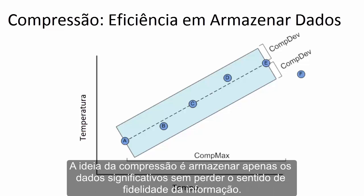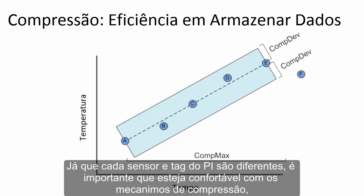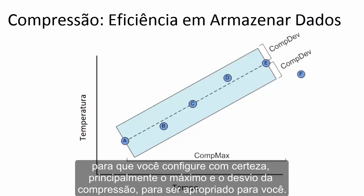The idea is to store only the meaningful data without losing any meaningful fidelity in the information. Since every sensor and PI Tag are different, it's important that you are comfortable with the mechanics of compression so that you can confidently set compression deviation and compression maximum to match what is appropriate for you.